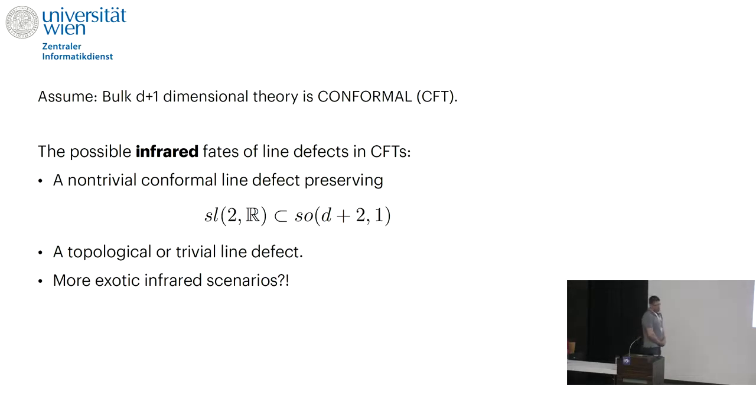Given the setup today, for simplicity, I'll assume that the bulk theory is gapless, in a conformal fixed point. We're placing some line defect in a conformal field theory. And you can ask, what can such a line defect flow to in a conformal field theory? Usually when we talk about conformal field theories, most of the discussion is about local operators. Not much is known about line operators in general conformal field theories.